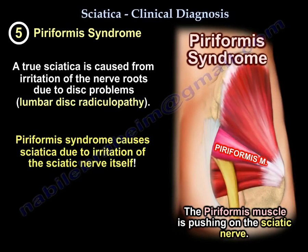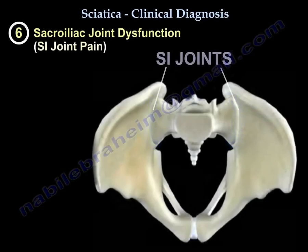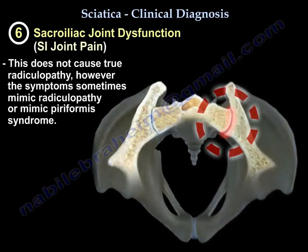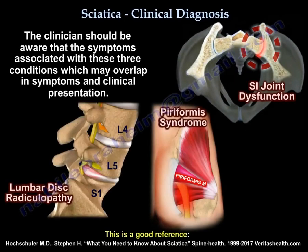The last entity to mention is sacroiliac joint dysfunction, which does not cause true radiculopathy. However, its symptoms can sometimes mimic radiculopathy or piriformis syndrome. The clinician should be aware that these three entities — lumbar radiculopathy, piriformis syndrome, and SI joint dysfunction — can overlap and mimic each other.